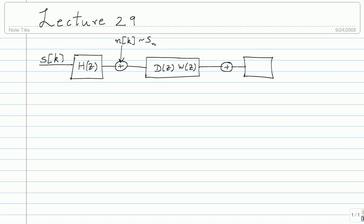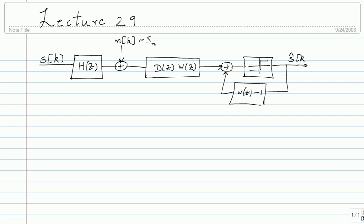When you whiten the noise, the signal that had ISI removed by D(Z) also passes through W(Z). So you want to run 1/W(Z) just on the signal. A nice way is to run the output through a slicer — which gives approximately just the signal component — and put it in a feedback loop to implement 1/W(Z). This filter is called a precursor equalizer and this is called a postcursor equalizer.